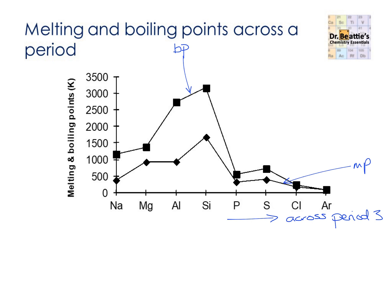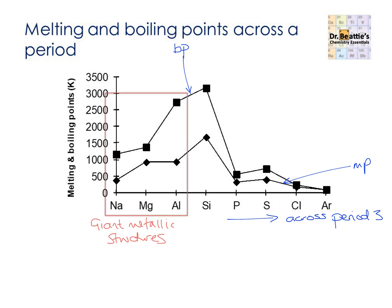We've got four sections to look at. The first section is going from sodium, magnesium to aluminium. The types of bonding that these three different groups — group 1, 2 and 3 — do is metallic bonding in their elements. So we can see that they're giant metallic structures. The trend within this part of the graph is an increase as we go from group 1 to group 2 to group 3, and we need to be able to explain that.